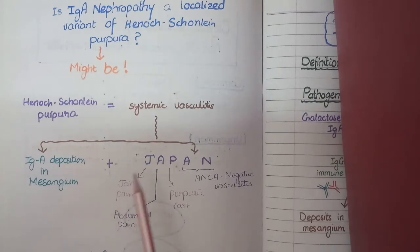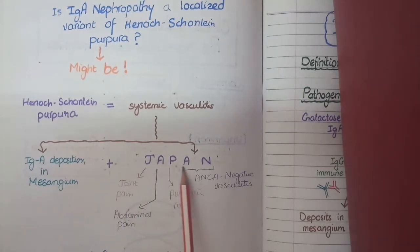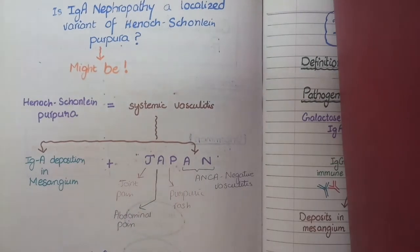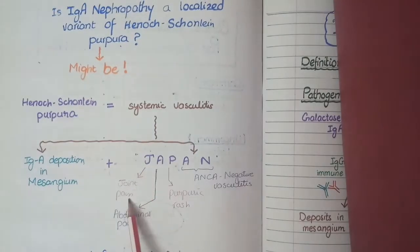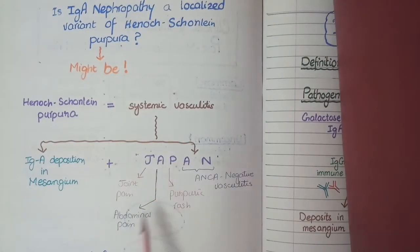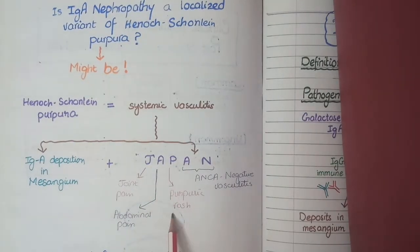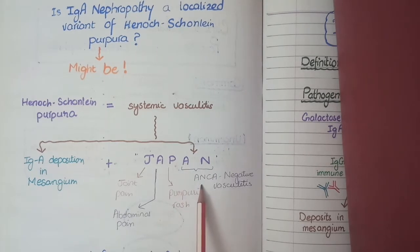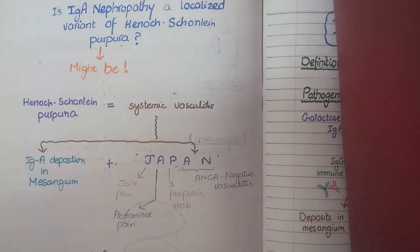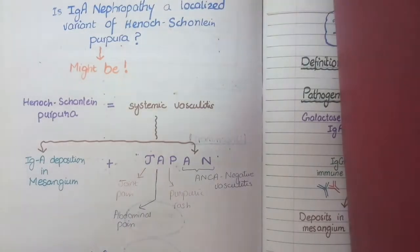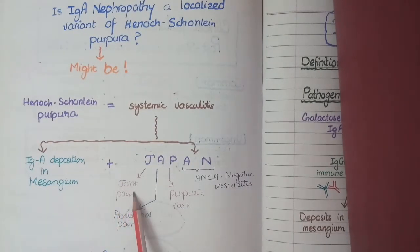These additional features of Henoch-Schönlein purpura can be remembered by the mnemonic JAPAN: J stands for joint pain, A for abdominal pain, P for purpuric rash, and AN for ANCA-negative vasculitis. So in HSP, along with IgA deposition in the mesangium, these features can also be present.